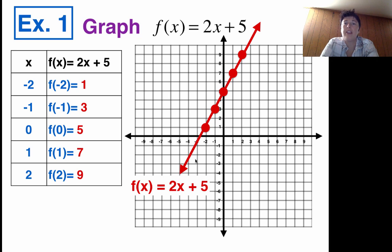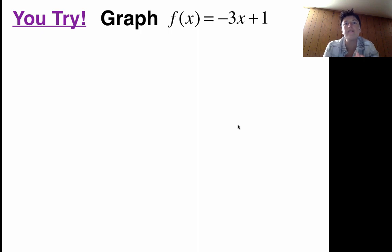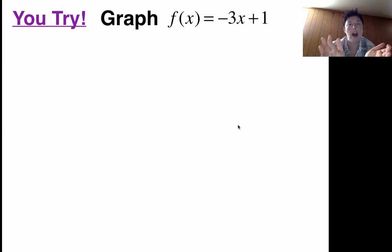One thing I'd highly recommend is labeling the function on your actual graph — f(x) = 2x + 5. Usually down by the arrow is a good spot. So make sure you get those labels on there. Now your turn: can you graph f(x) = negative 3x + 1? Go make the table and the graph. Pause the video and see if you can do this correctly.